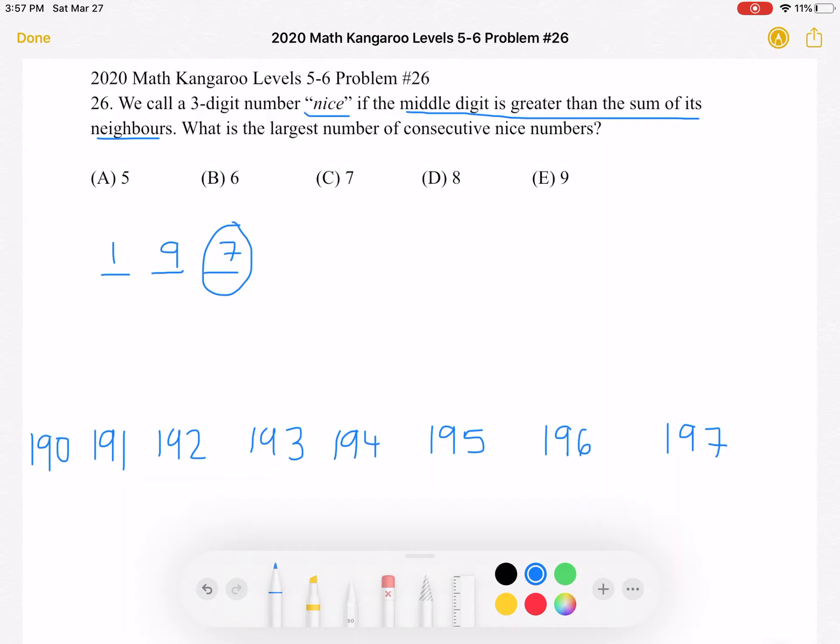And this is true, and we know that this is the largest number of consecutive nice numbers because the ones digit cannot be greater than 7. So it's 7 and then everything less than that: 6, 5, 4, 3, 2, 1, 0. And that gives us a total of 8 consecutive nice numbers, which is answer choice D.